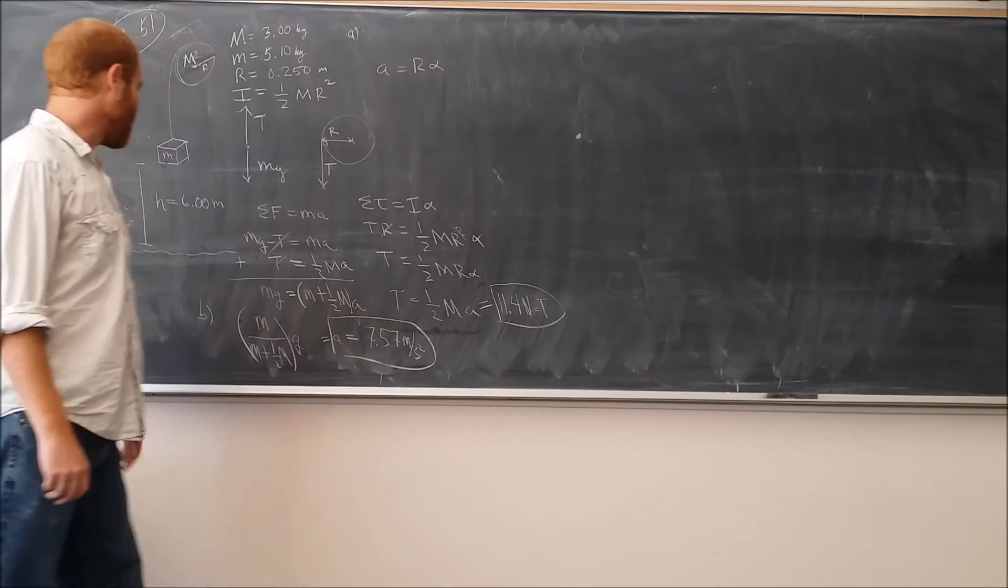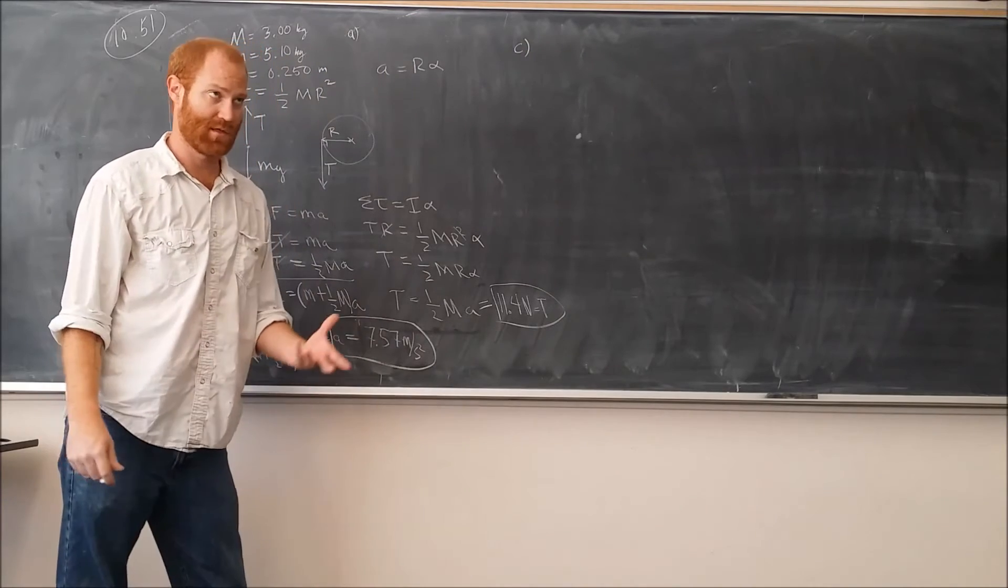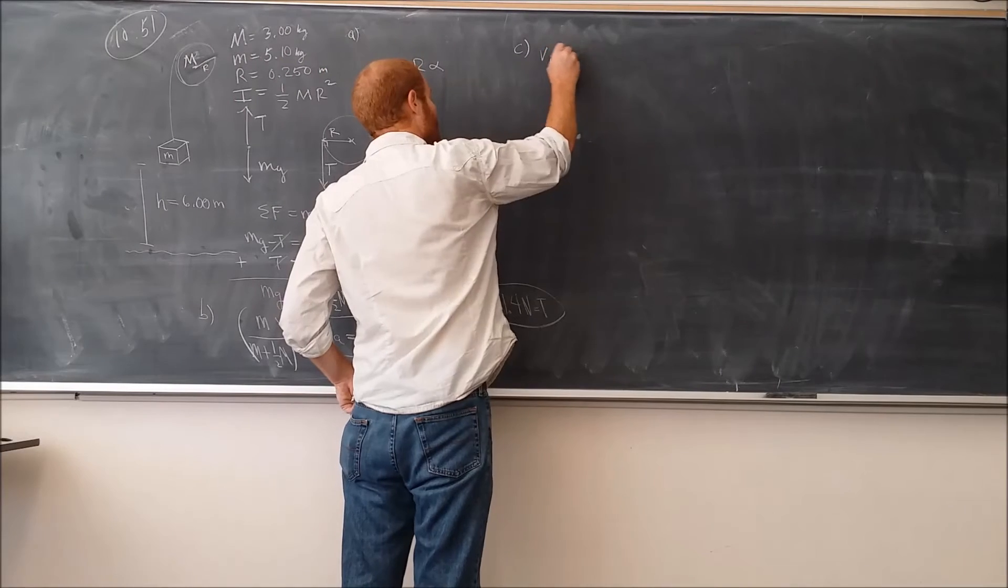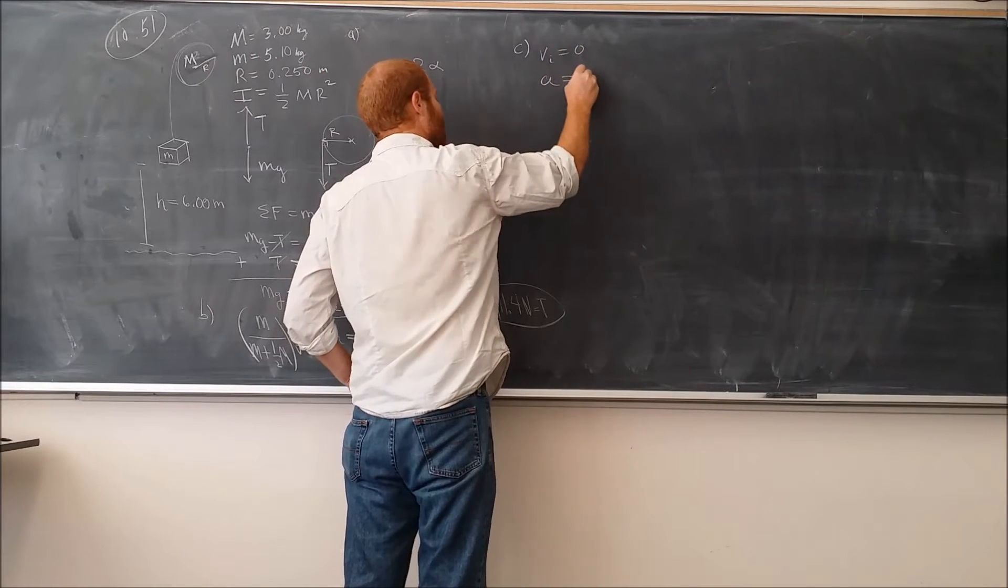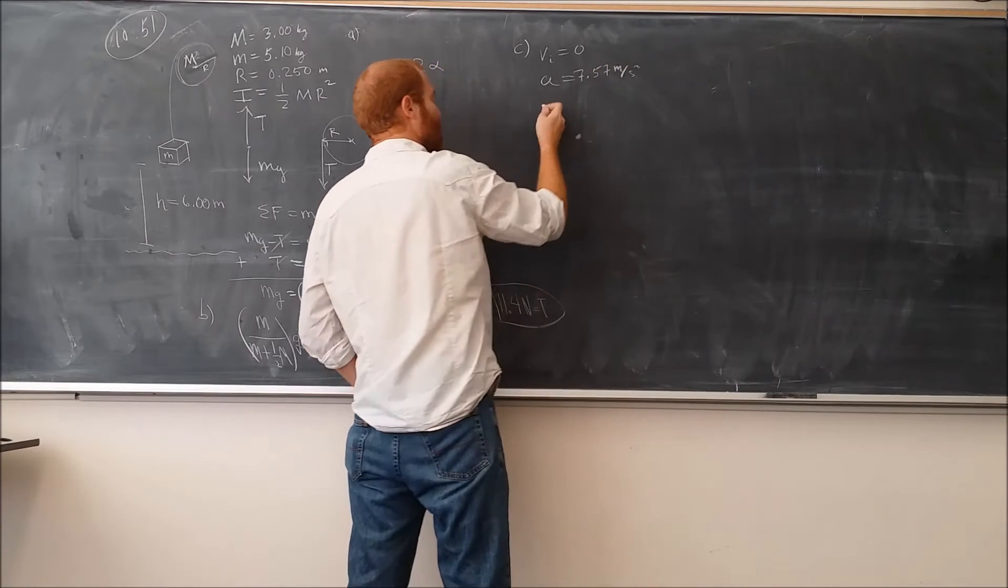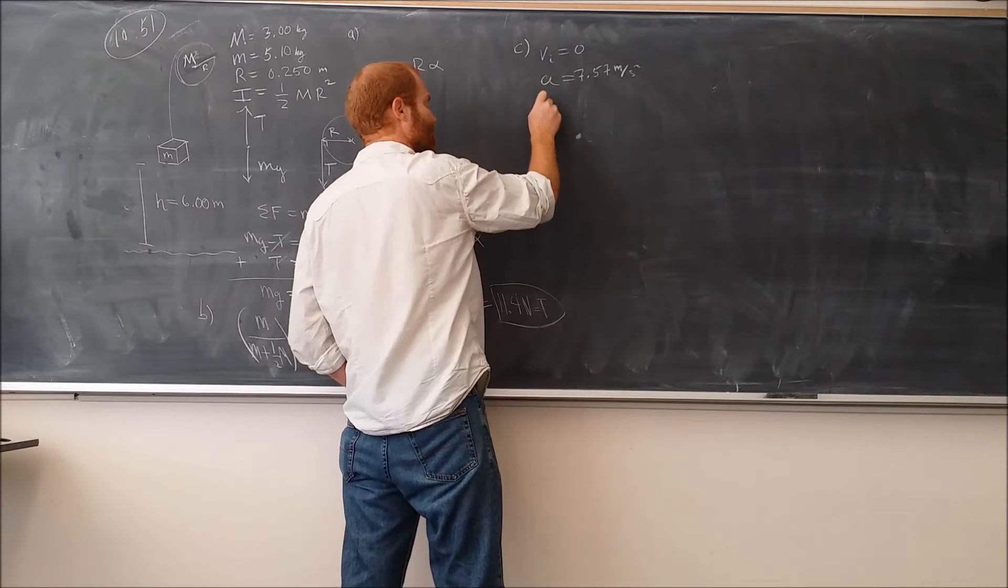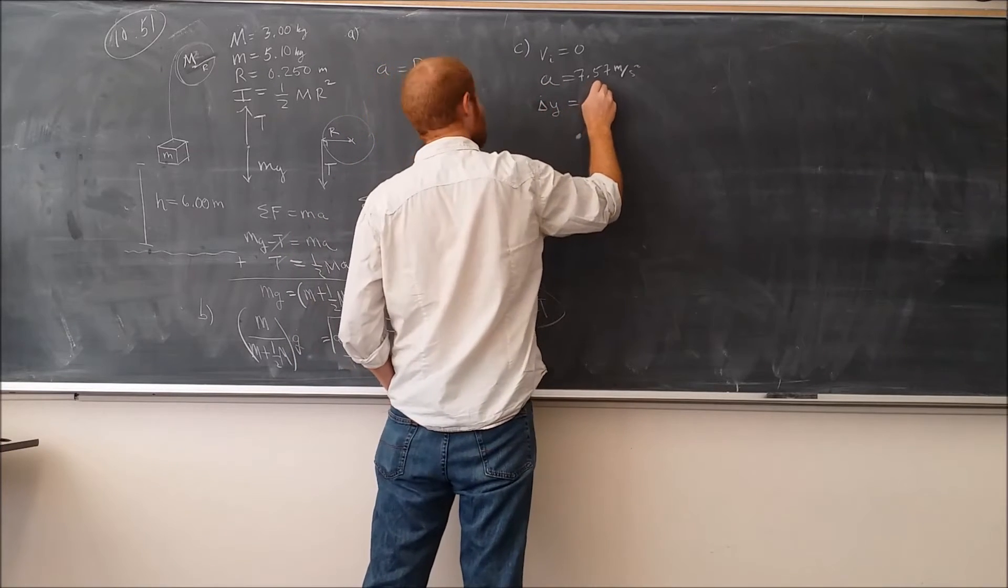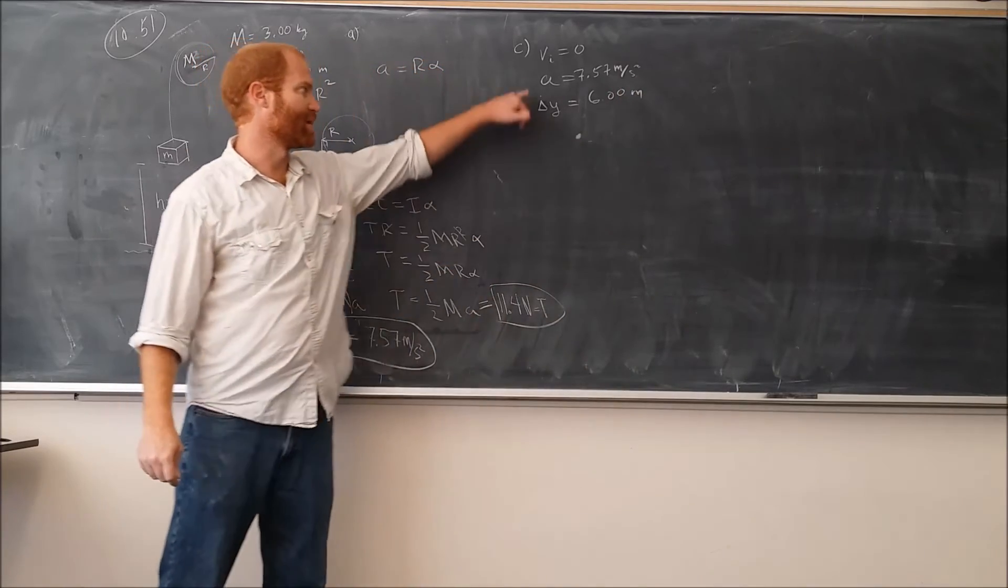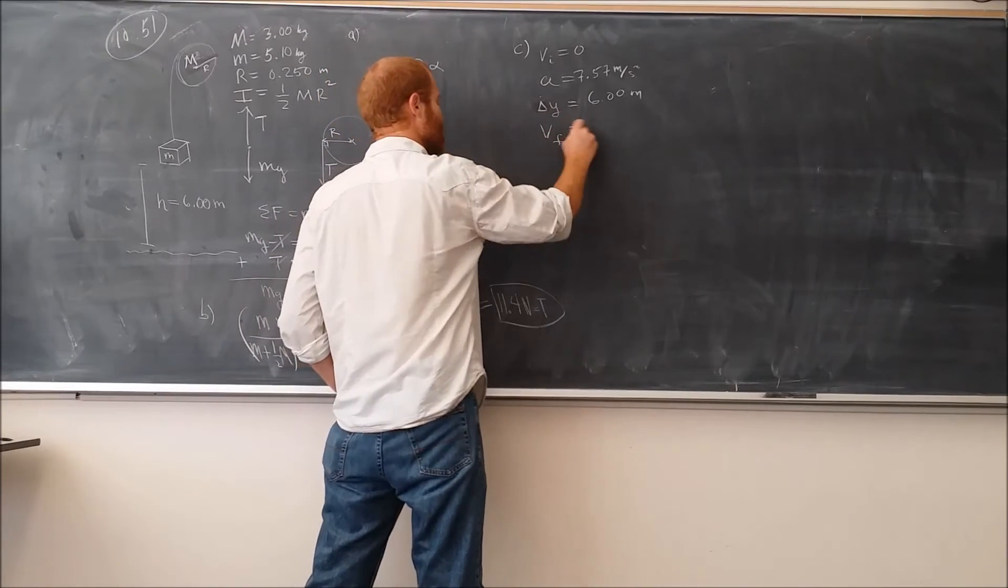For part C, they want us to calculate what the velocity of the object is right here. And in order to do that, we can note that the initial velocity of the box as it falls is zero. The acceleration is 7.57. And the change in height, the change in y, is equal to 6. This is taken down to be positive because everything is negative in this case otherwise. Then we want to find what VF is. We can use this equation.